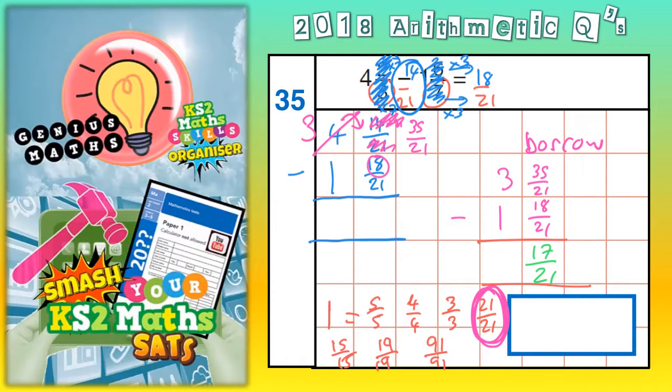And the final column is easy, it's just 3 take away 1, which is 2, 2 whole ones. So your final answer is 2 and 17 21ths. So let's do it to the clock.